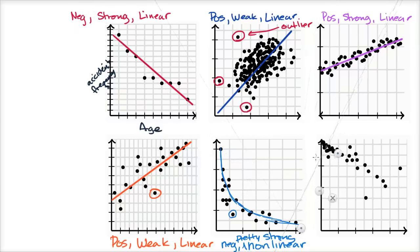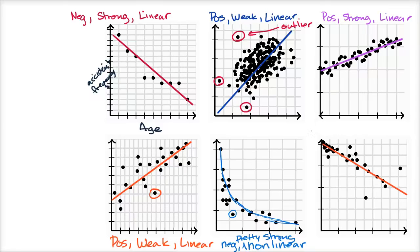This last one looks like a negative linear relationship to me — a fairly strong negative linear relationship, although there are some outliers. Let me draw this line. That seems to fit the data pretty well. So this is a negative, reasonably strong linear relationship, but these are very clear outliers — well away from the cluster of where most of the points are — at least two significant outliers here.